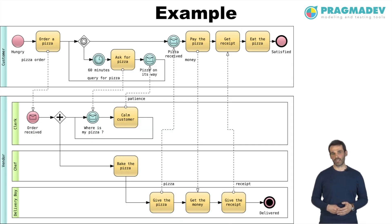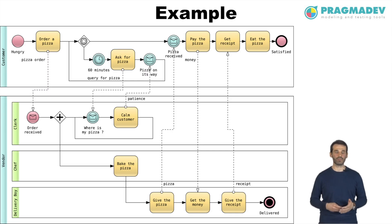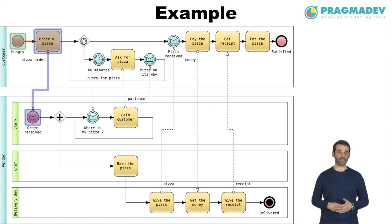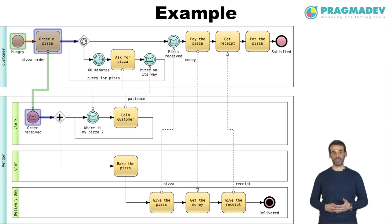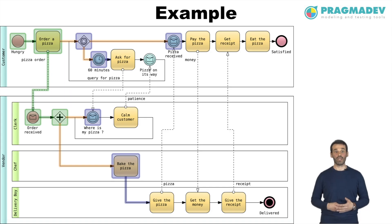Let's put everything together in a simple example. This BPMN model describes a collaboration between two participants: the customer and the vendor. Both pools are shown as white boxes with their internal processes visible. The vendor process is organized in three roles — clerk, chef, and delivery boy. The collaboration starts with the customer feeling hungry and deciding to order a pizza. The pizza order starts the vendor process, and both processes can proceed in parallel. The customer waits for the pizza; if it is not received within 16 minutes, he will complain. In the vendor process, the clerk waits for complaints while the chef prepares the pizza.